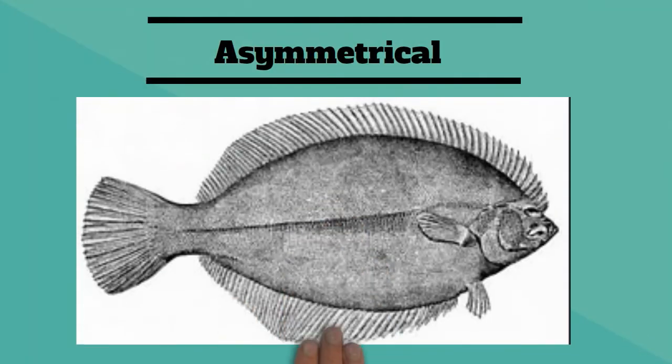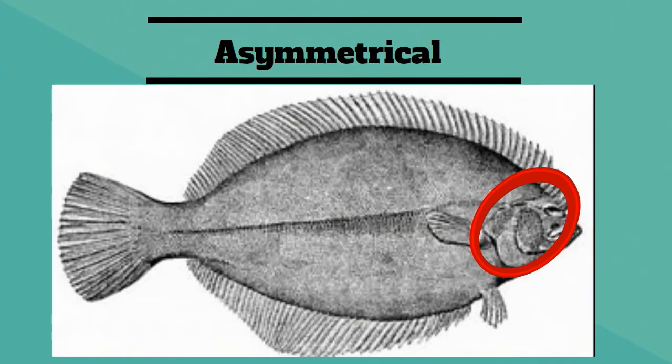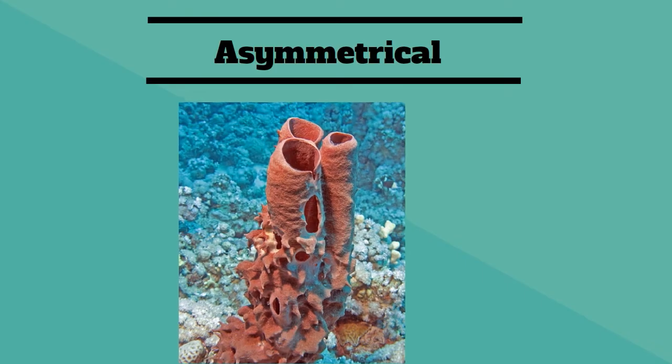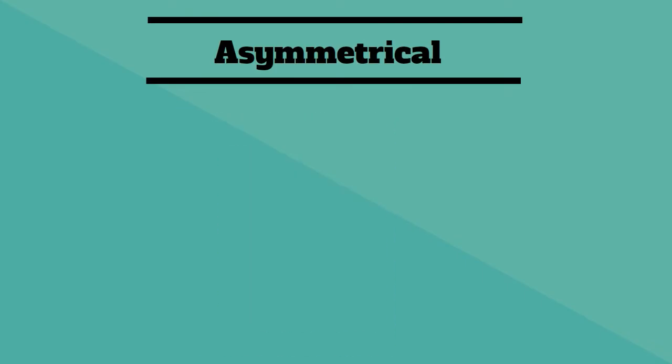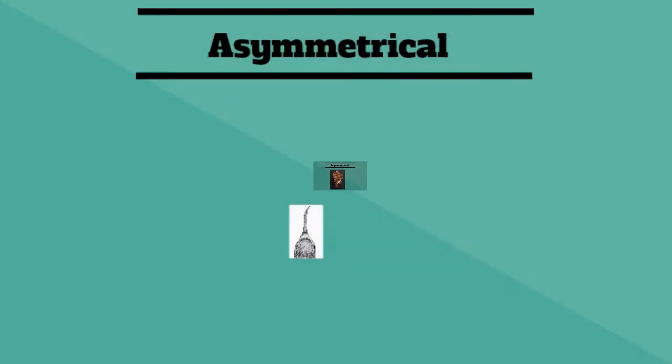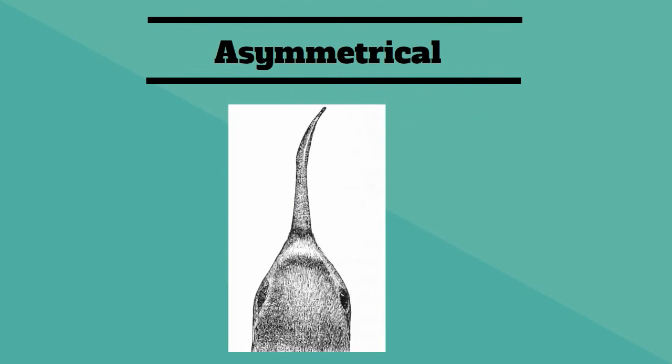This flounder has two eyes on one side of its head. Sponges are asymmetrical. Some sea snails are asymmetrical.